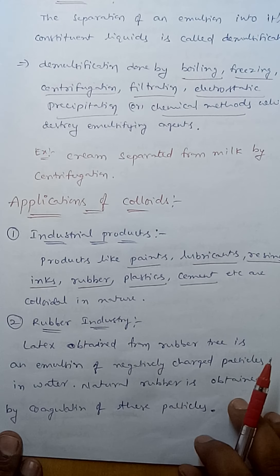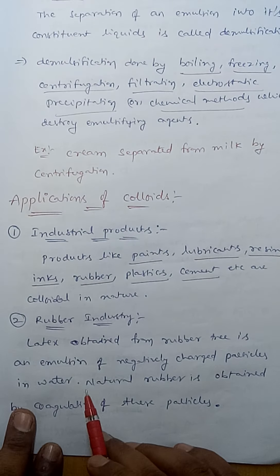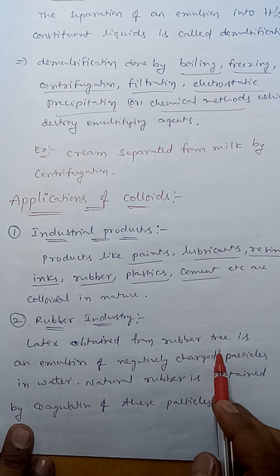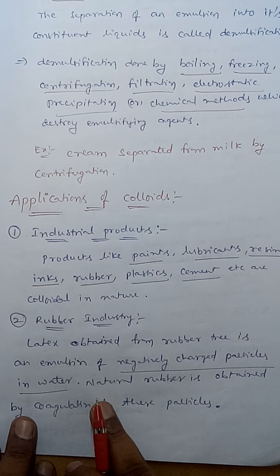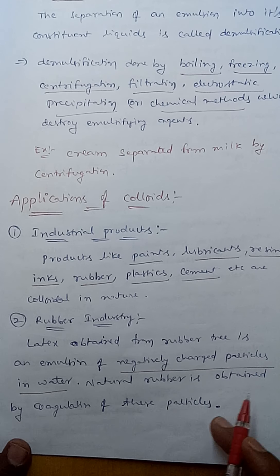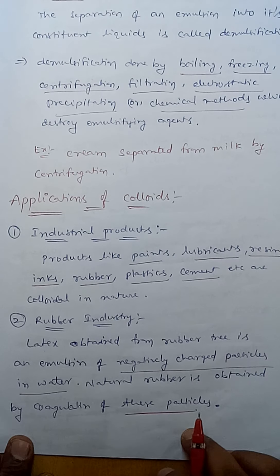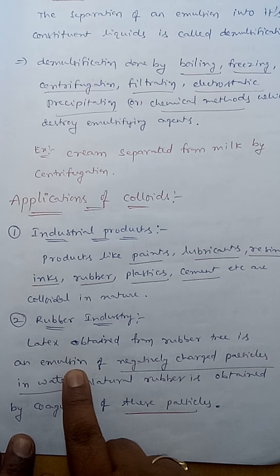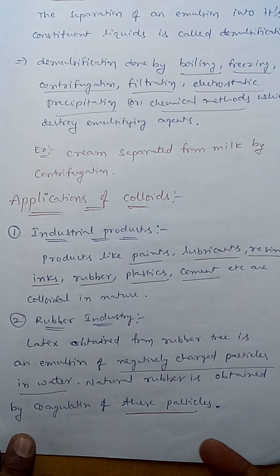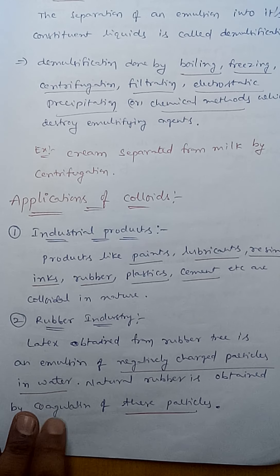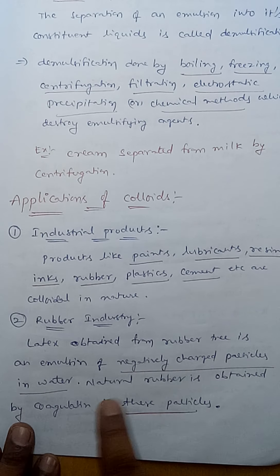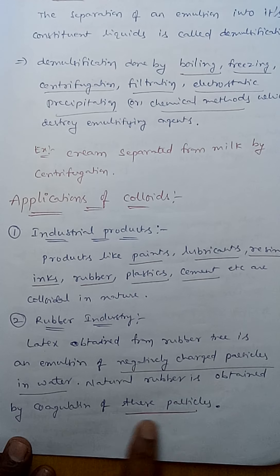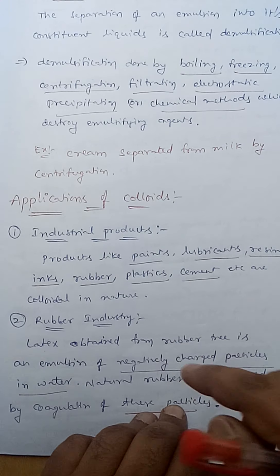In the rubber industry, rubber is obtained from rubber latex, which is an emulsion of negatively charged particles in water from the rubber tree. Natural rubber is obtained by coagulation of these particles. Emulsions are colloids where both the dispersed phase and dispersion medium are liquids.